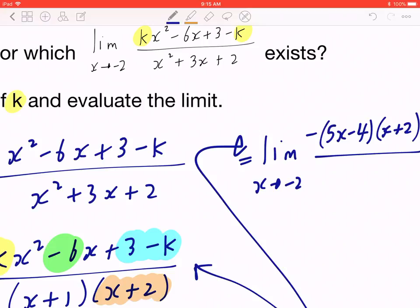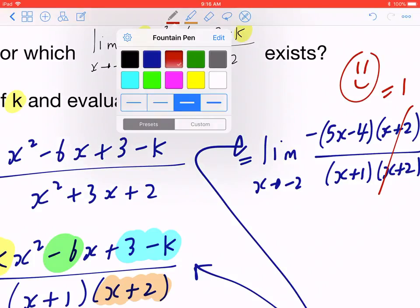As expected, you copy the denominator, and again, the fact that x + 2 divided by x + 2 equals 1, this is telling you you're on the right track.